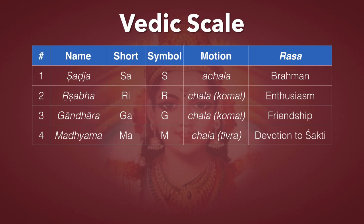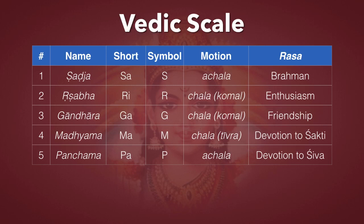The fifth Swara is Panchama. Short is Pa. Symbol is P, and it's Achala — it never moves. The Sa and the Pa are always the same. And it expresses devotion to Shiva.